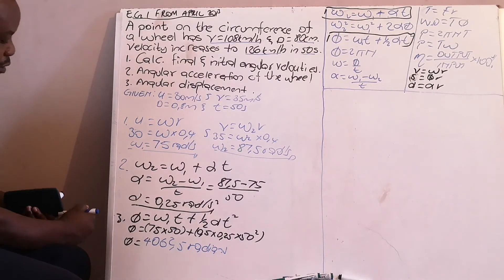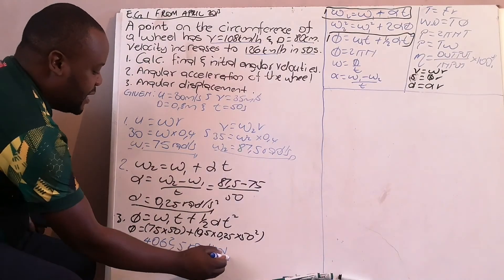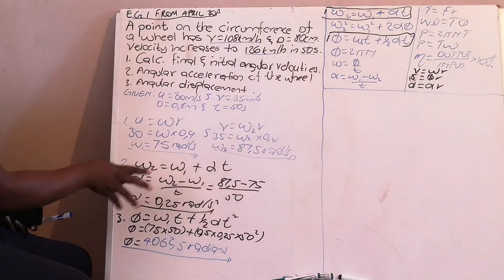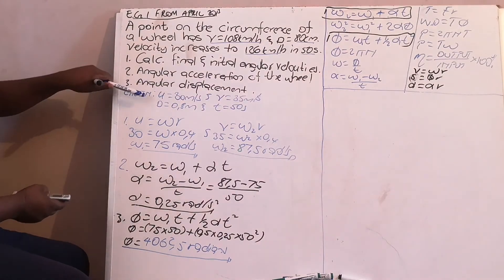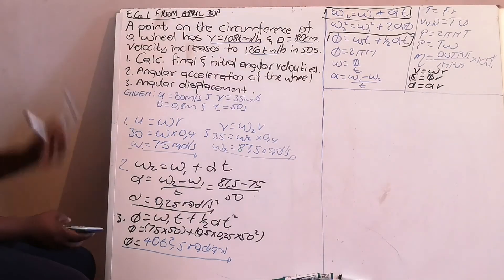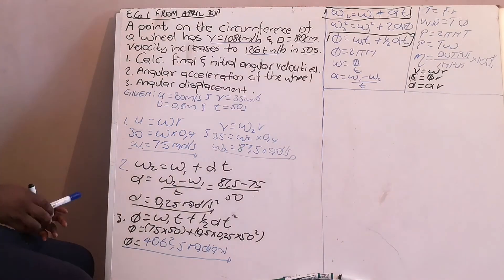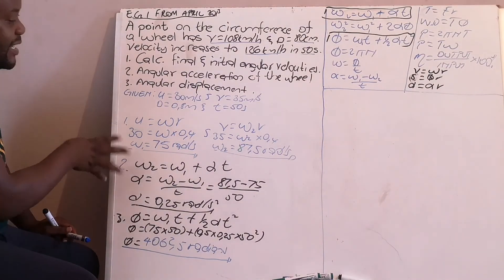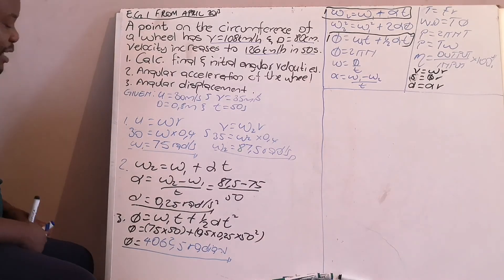This is your angular displacement in radians. So just check your equations, check which equation you can use, apply the equation, write your data down, and then use the kinematic equations to solve the problem. This is your second and last example coming up, also based on angular motion.